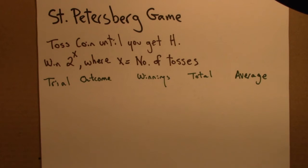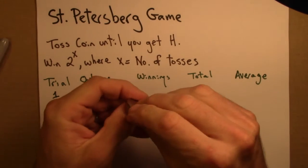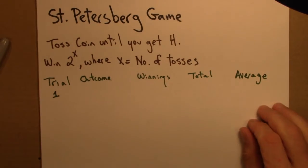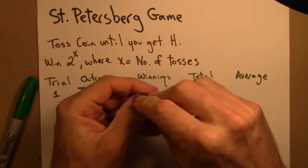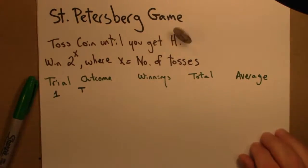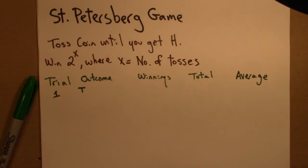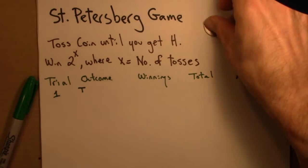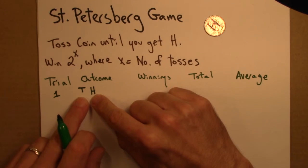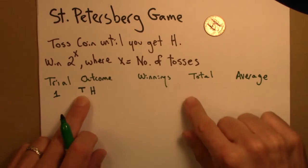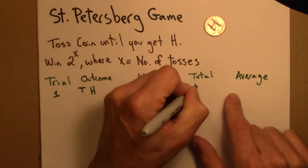The easiest way to illustrate this is to just play a couple of rounds. Trial 1: the first toss was tails, and the second toss was a heads. So TH — I had to toss twice. So x is 2. 2 to the 2, 2 squared is 4. My total winnings are 4 and my average is 4.